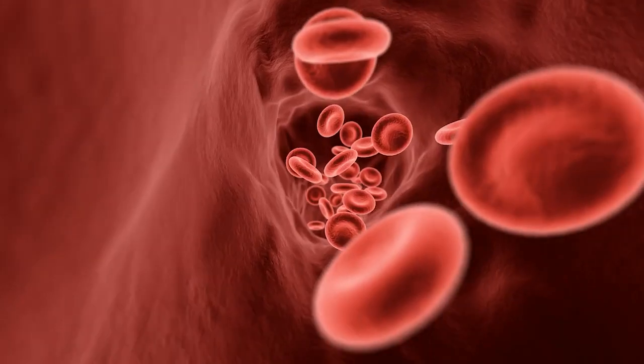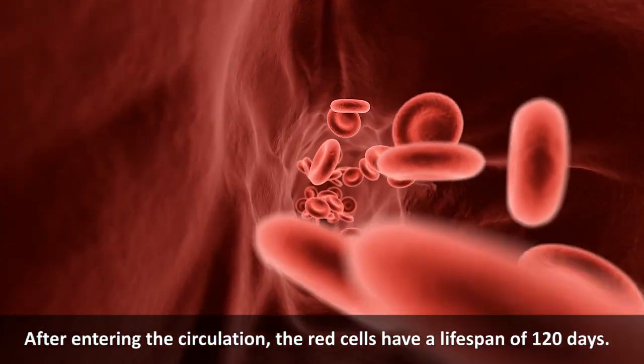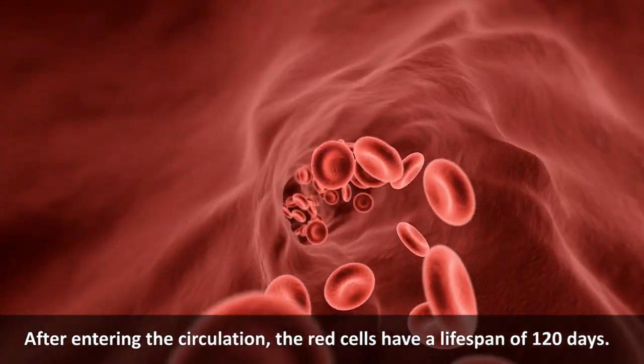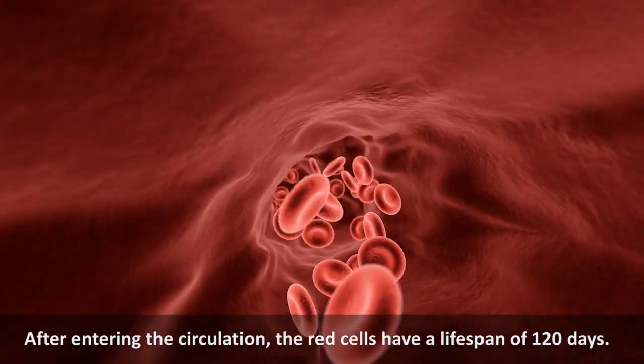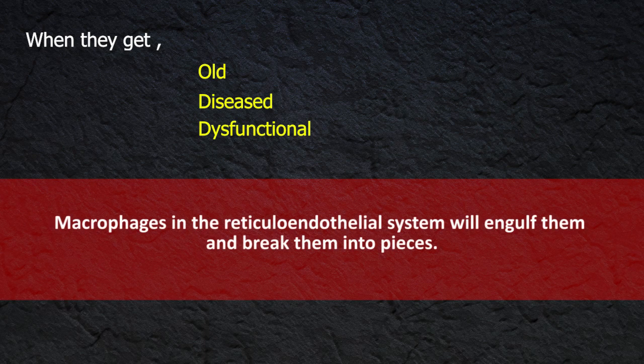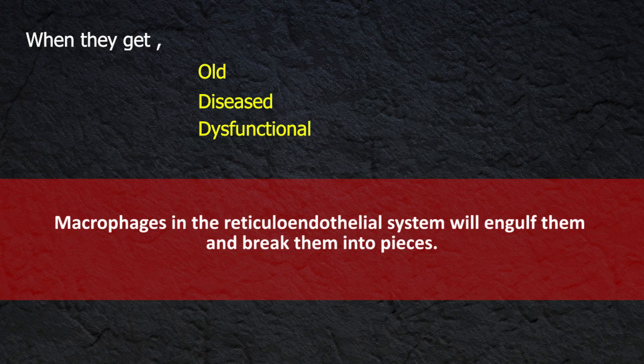Destruction: After entering the circulation, the red cells have a lifespan of 120 days. When they get old, diseased, or dysfunctional, macrophages in the reticuloendothelial system will engulf them and break them into pieces.